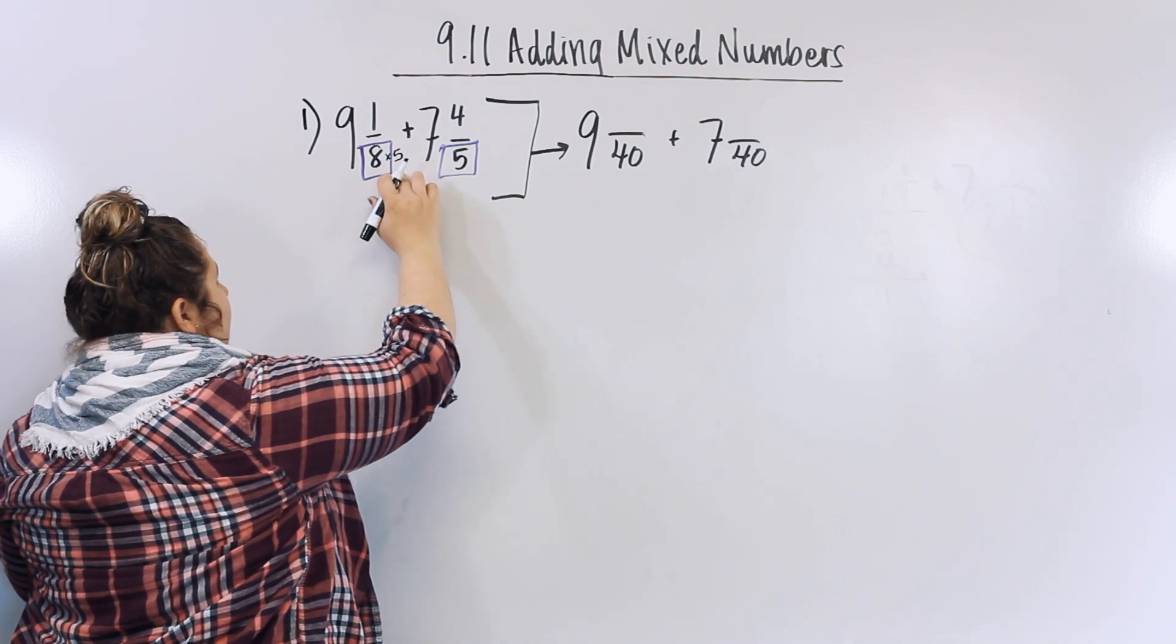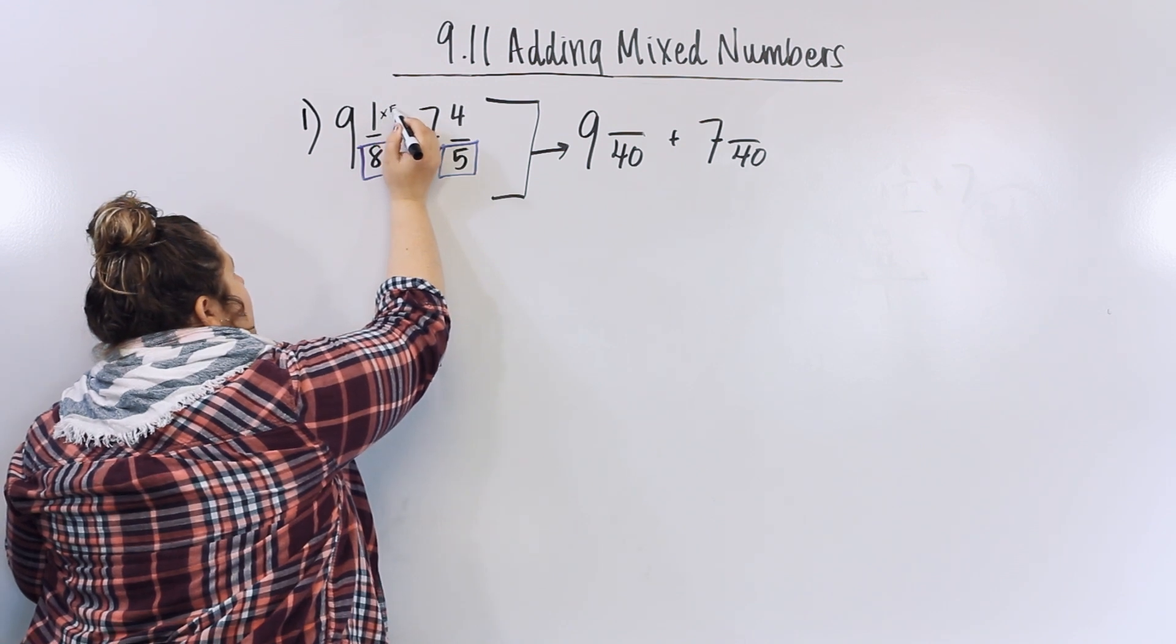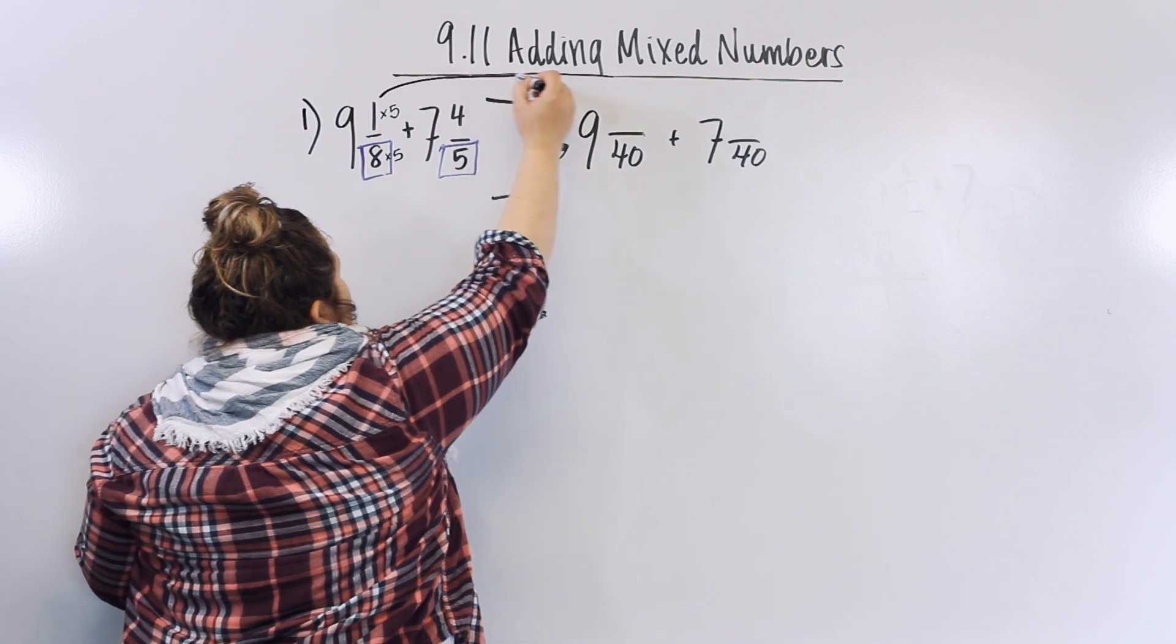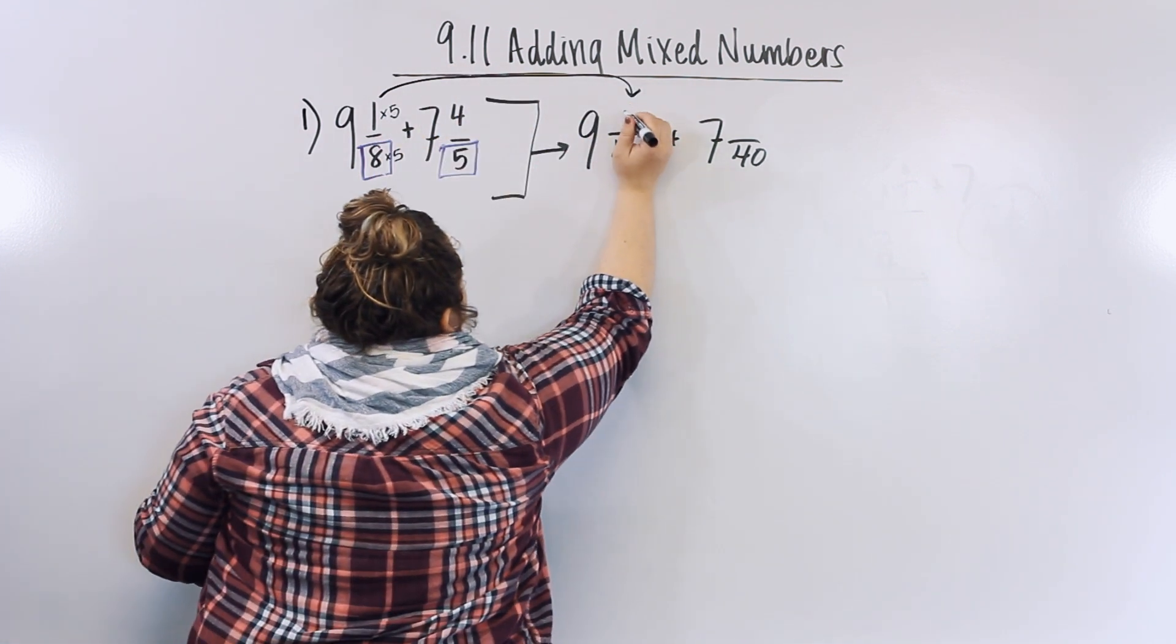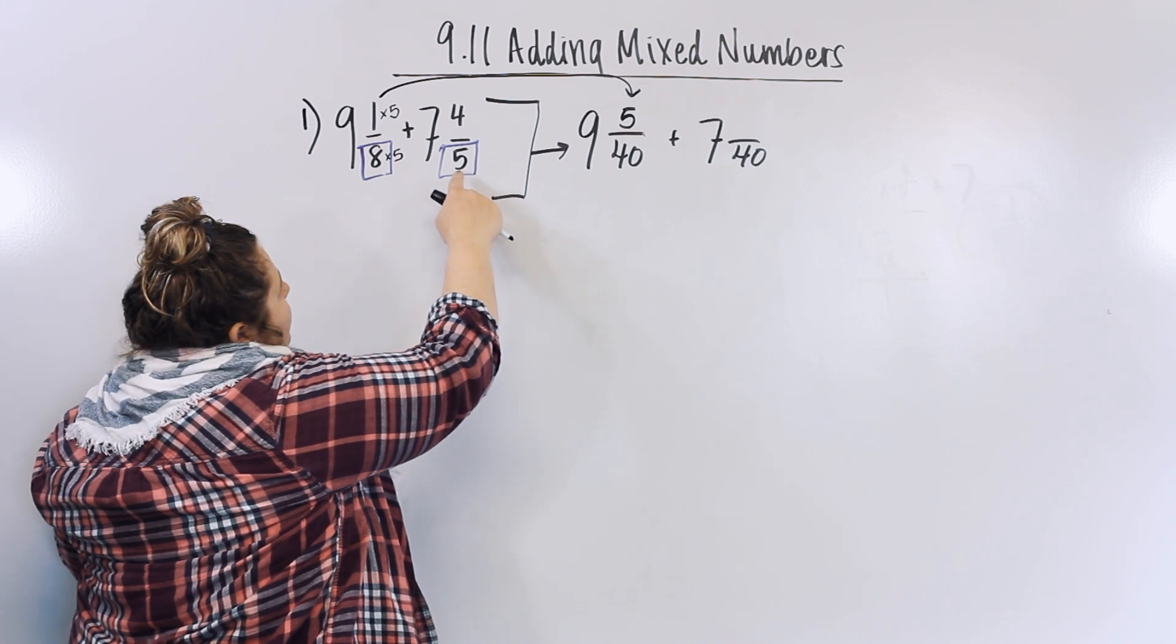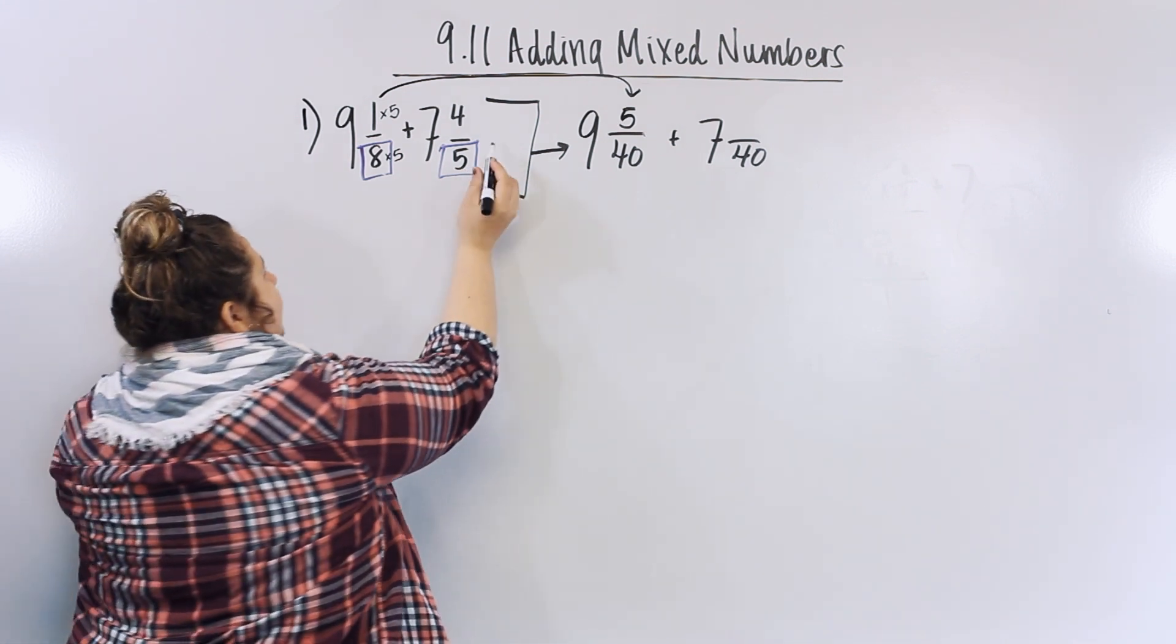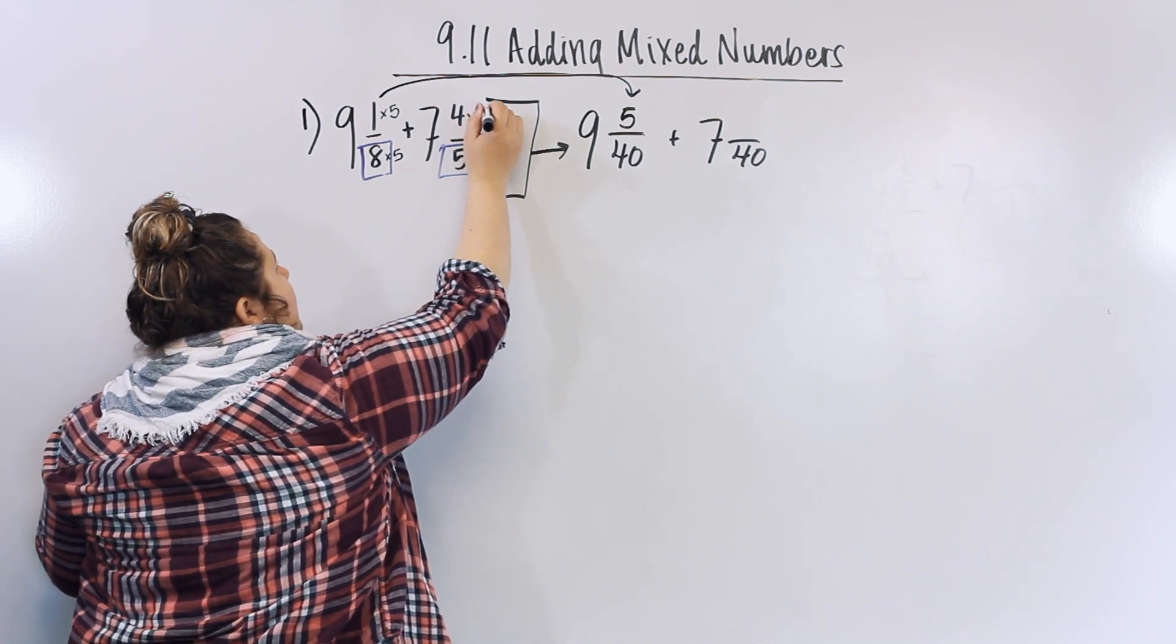So whatever I do to the denominator I have to do to the numerator. So now I'm going to put these answers right here: one times five is five, so that's my new numerator. Now what number times five equals forty? Eight. So I'm going to multiply this by eight and this by eight. Four times eight is thirty-two.